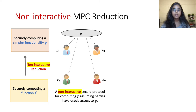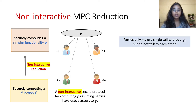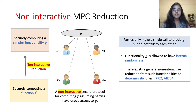Going a step ahead, we see that f non-interactively reduces to a function g if the parties in the protocol only send single queries to the oracle g and do not interact with each other at all. Let me emphasize a key point: the function g is allowed to have its own internal randomness and need not necessarily be deterministic.